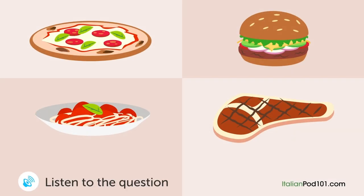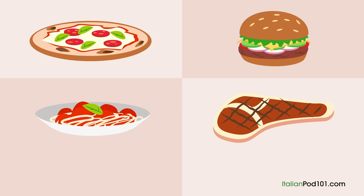A man and a woman are looking at a menu in a restaurant. [Question: What did the man order?] "What would you like to order?" "This pizza looks delicious. I'll have it." "I ate pizza yesterday. So... Ah, what do you think of this hamburger?" "Sounds like a good idea. I'll have it."